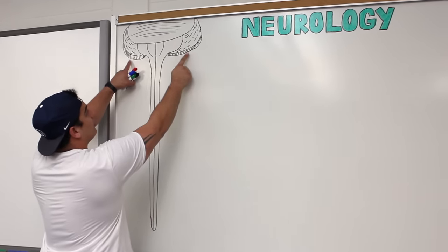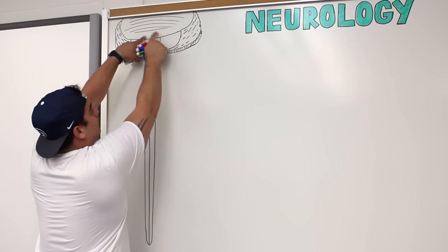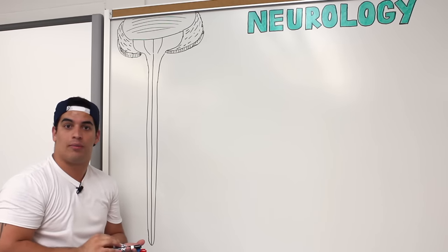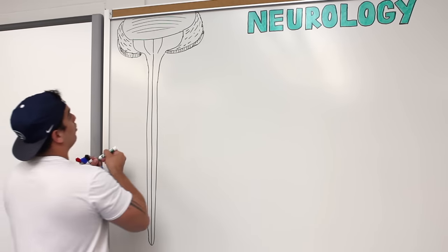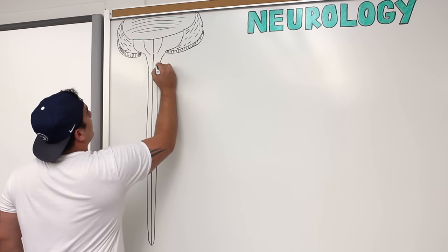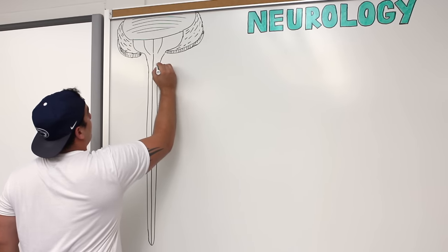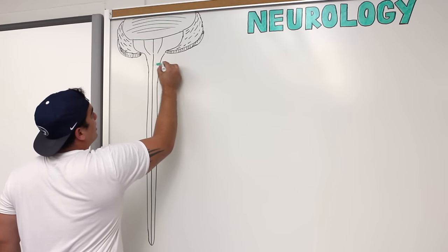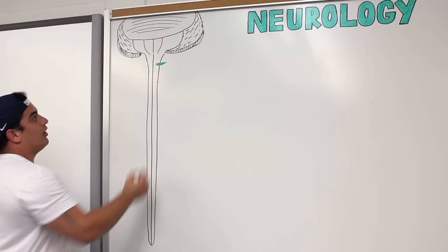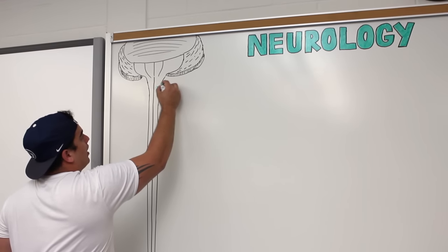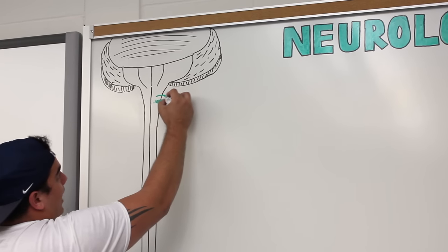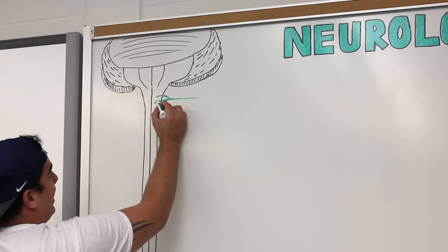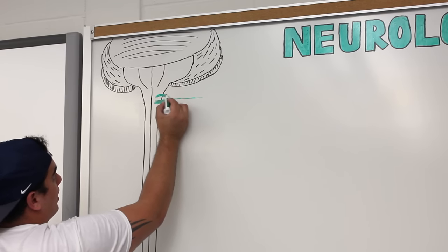Out of the anterior gray horn of the spinal cord, you'll have these rootlets coming out. You'll also have some things coming from the posterior aspect, and they'll come together to make this nerve. So you're going to have these posterior and anterior rootlets that are coming out to form spinal nerves.